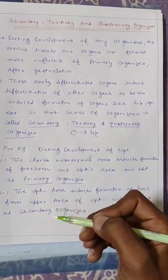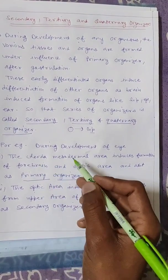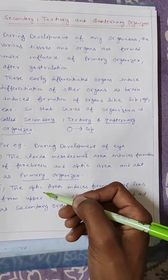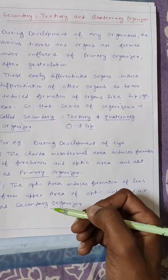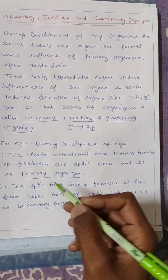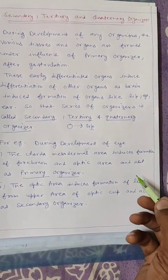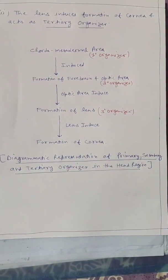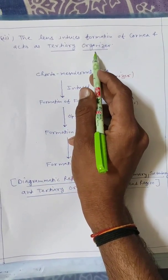The optic area is itself formed by induction from the primary organizer — the codomedial area — which formed the dermal area. Now, the optic area, once formed, further induces the formation of other organs and tissues. What do we call this? The secondary organizer. The optic area acts as the secondary organizer by inducing the formation of our lens.